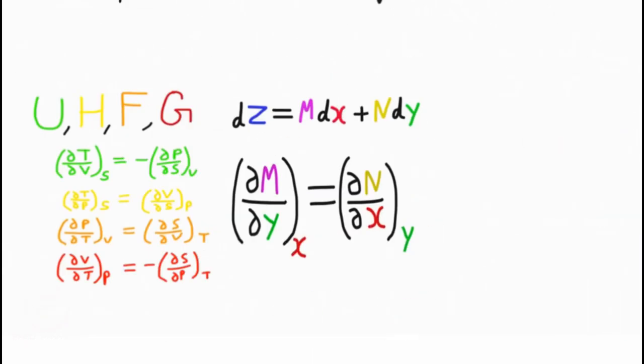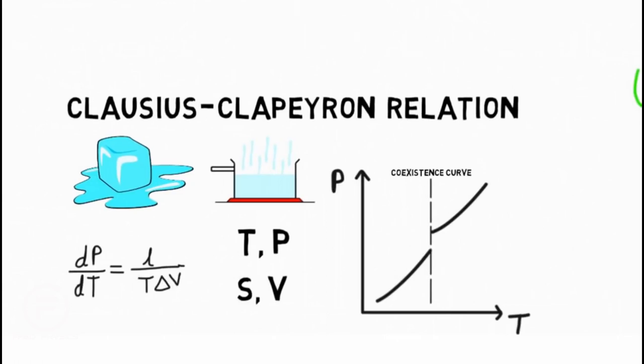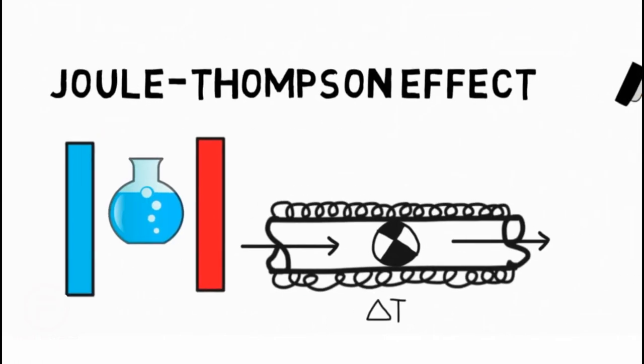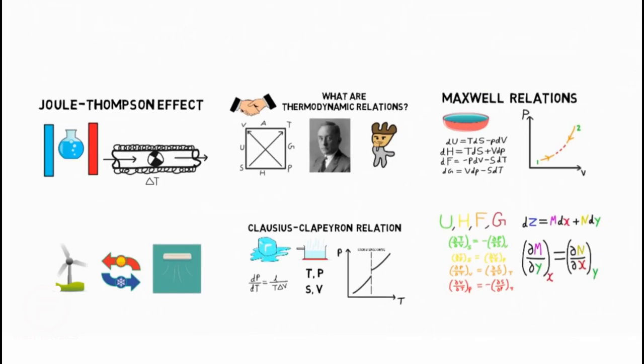Hence, we learned about what the thermodynamic relations are, then moved on to the Clausius-Clapeyron relation, and finally saw what the Joule-Thompson effect is.